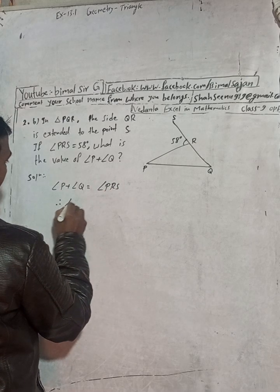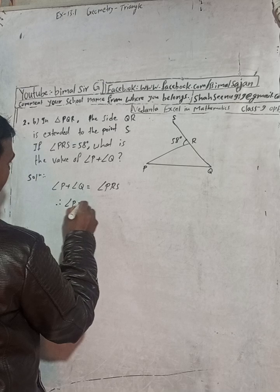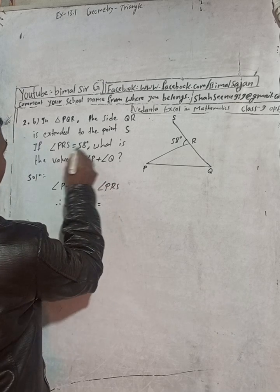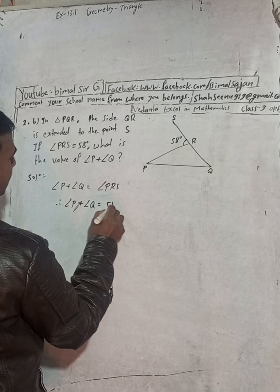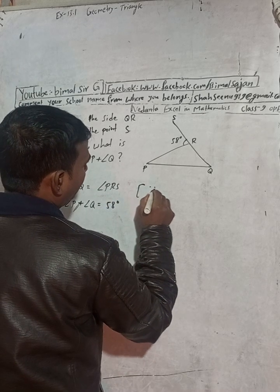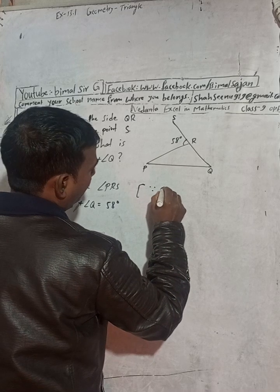Therefore, angle P plus angle Q equals angle PRS, which is 50 degrees. And the reason for this you can write here: because sum of exterior angle...